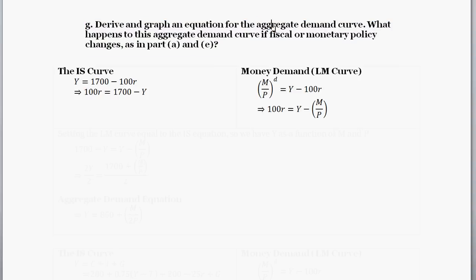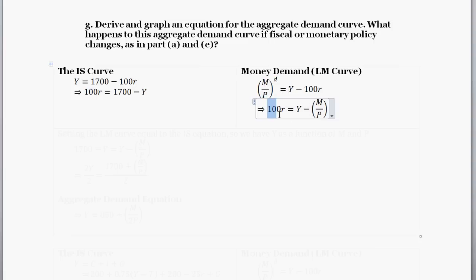In order to get aggregate demand, Y is a function of the price level — Y is equal to some stuff times P. So in order to get our IS curve and LM curve organized as such, we're going to slightly tweak the LM curve, which before we had as Y equals 7800 minus 100R. Our money demand equation had been written as Y equals 100R plus something depending on the money supply. We now have it written so that the LM curve is 100R equals this stuff with Y and P in it. And now we have our IS curve, which is 100R equals this stuff.